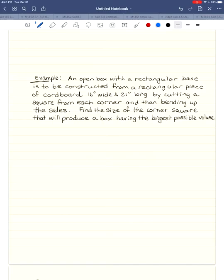An open box with a rectangular base is to be constructed from a rectangular piece of cardboard that's 16 inches wide and 21 inches long, by cutting a square from each corner and then bending up the sides. Find the size of the corner square that will produce a box having the largest possible volume. Okay, alright, so let's see, there's our objective, maximize volume of a box.